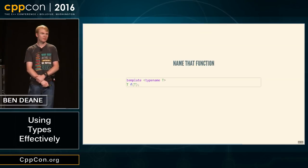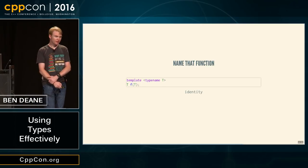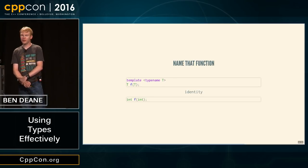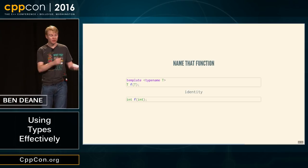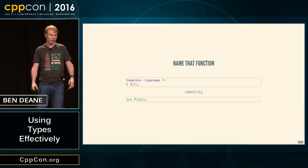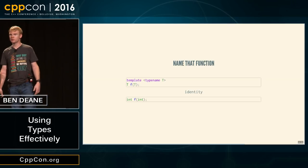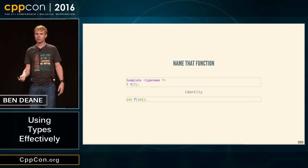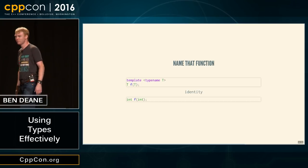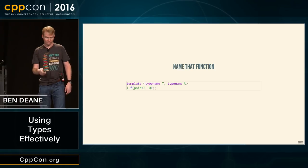Here's the first function: T f(T). What would we call this? Identity. For any given instantiation of this function template, it pretty much has to return the thing you give it — it really couldn't do anything else. Next function: T f(T, T). We'd call it 'first'. How about f(bool, T, T) returning T? I think we'd call it something like 'select' — it uses its boolean argument to select which of the two other arguments to return.